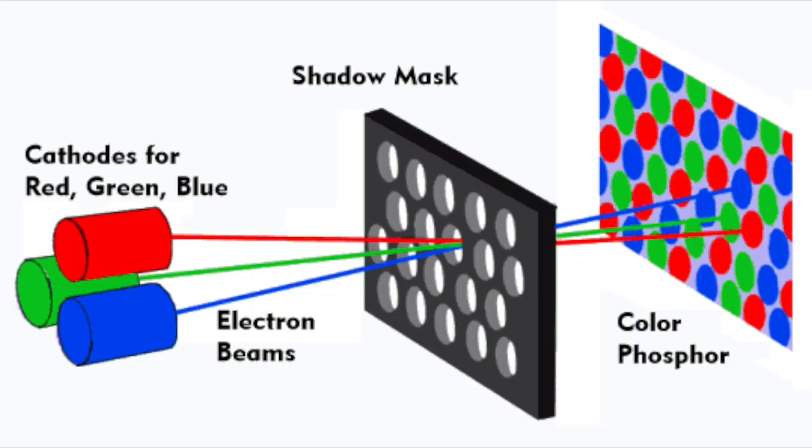In a colored TV we have three electron guns arranged in a triangle. Very close to the phosphor coating there's a thin metal screen perforated with very small holes aligned with the phosphor dots on the screen. There are three phosphors that emit red, green, and blue light.